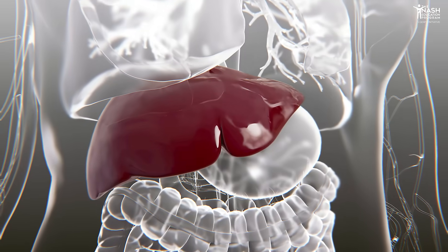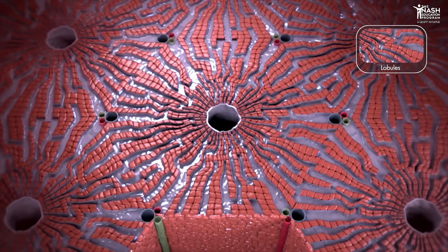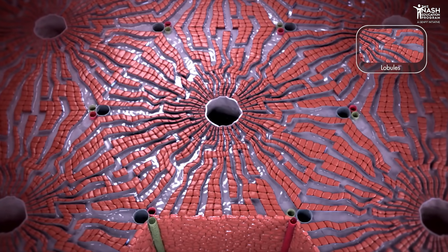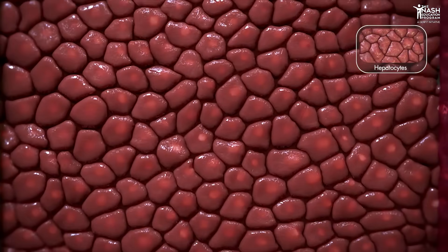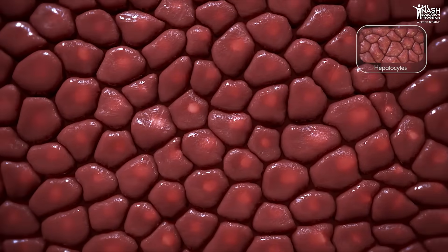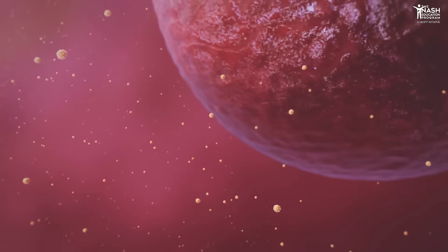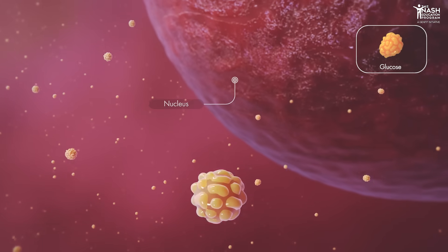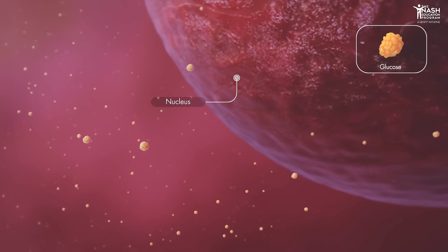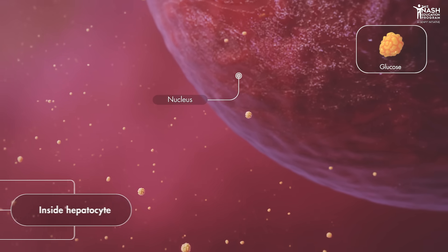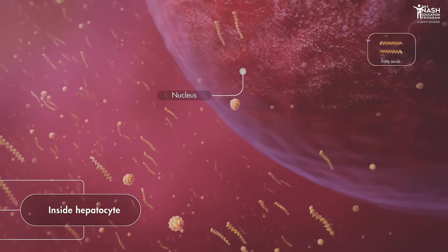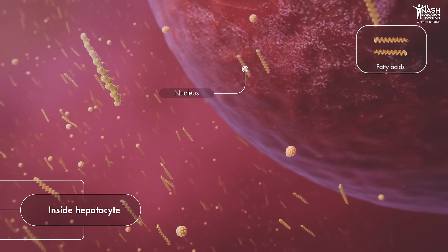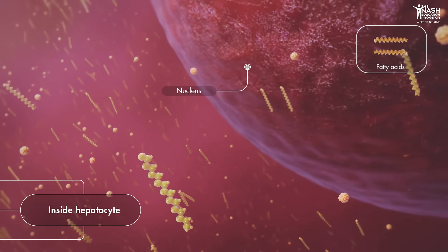The liver carries out many vital functions, including nutrient metabolism carried out by specialized cells called hepatocytes. For example, when excess glucose is present within the hepatocyte, it can be transformed into fatty acids, known as de novo synthesis.